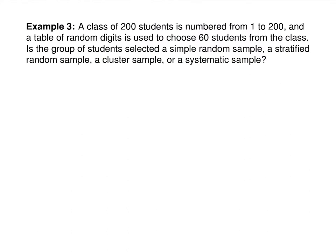A class of 200 students is numbered from 1 to 200 and a table of random digits is used to choose 60 students. Is this a simple random sample, stratified random sample, cluster sample, or systematic sample? Running through the options: were students divided into groups and chosen from those groups? No. Were they divided into groups and just one group picked? No. And we didn't pick every 10th student, so it's not systematic either. This is a simple random sample.